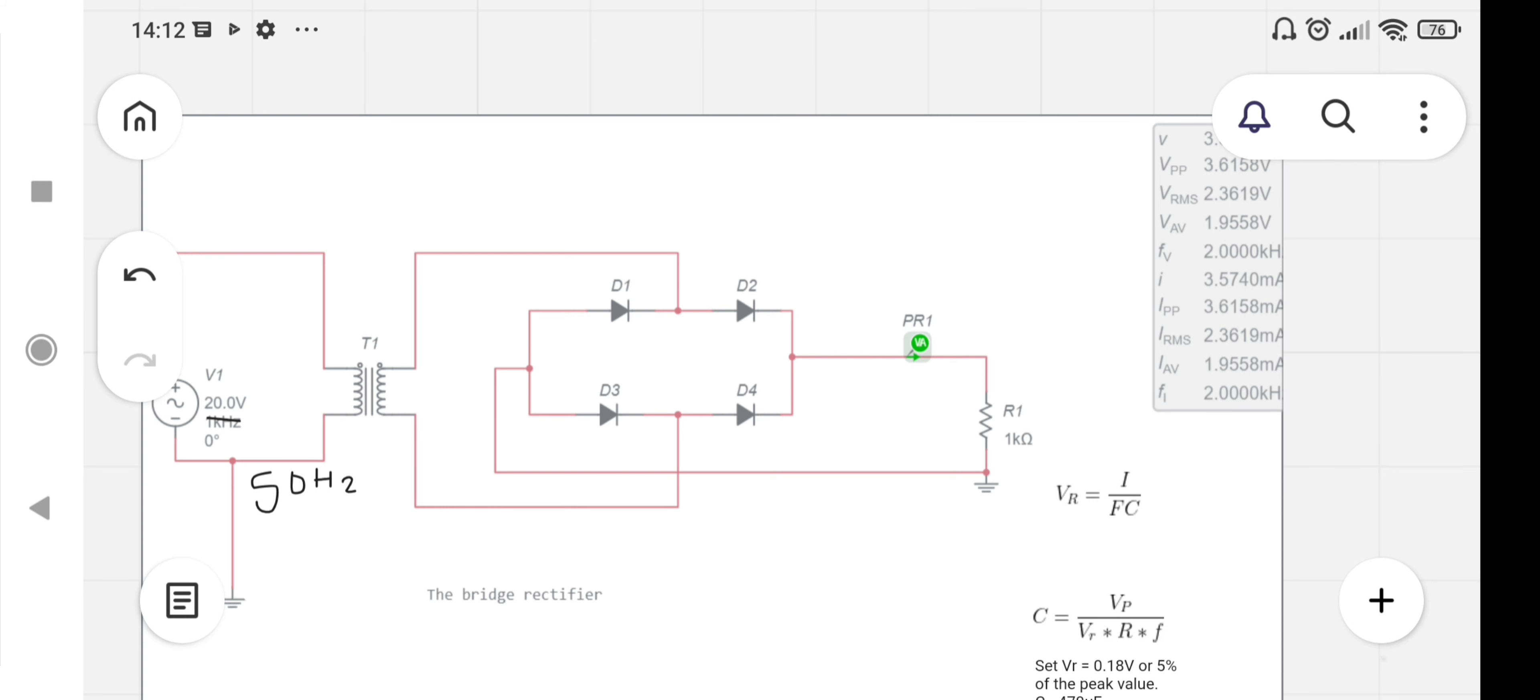This is the bridge rectifier circuit with four diodes: D1, D2, D3, and D4, a step-down transformer, and a voltage source of 20 volts and 50 Hertz frequency.